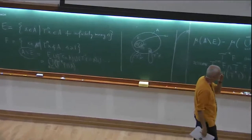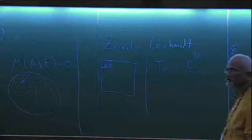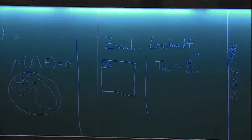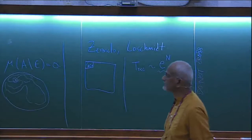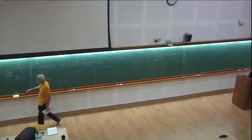Nowadays there are experiments being done on small systems, including quantum mechanical ones, where you might see such recurrences and possible quote-unquote violations of the second law. Let's look at some examples of what these exceptional points actually are.